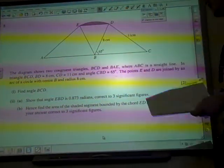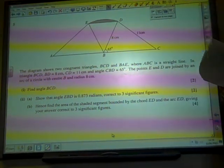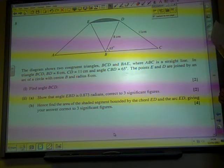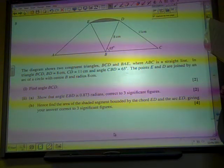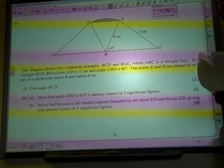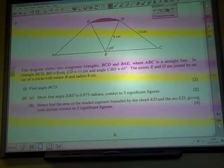Question 5. The diagram shows two congruent identical triangles BCD and BAE, where ABC is a straight line. We've given some bits of information, and points E and D are joined by an arc.